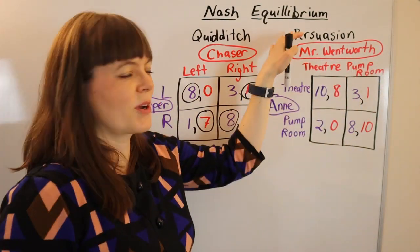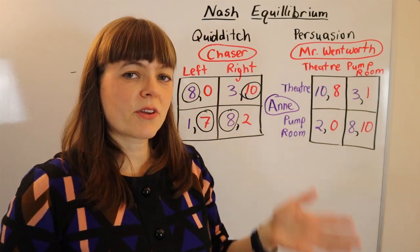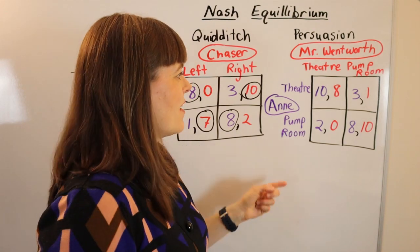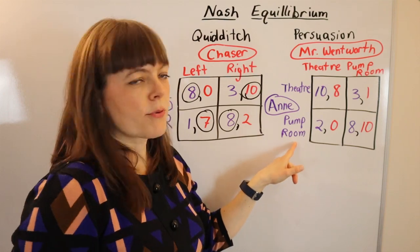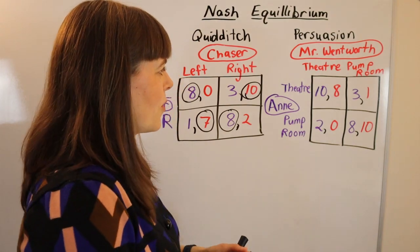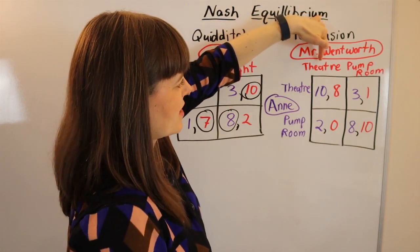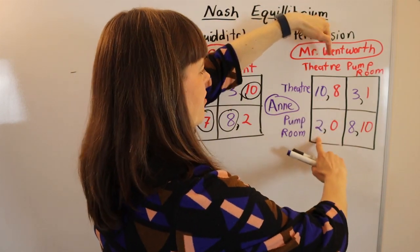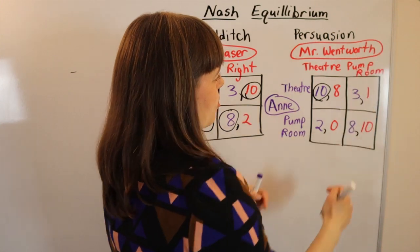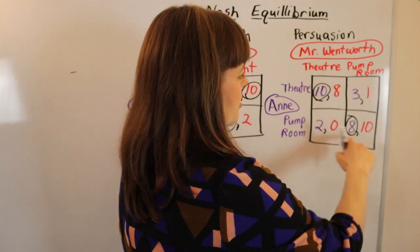Let's do the Persuasion example. Persuasion is a book by Jane Austen with two characters, Anne and Mr. Wentworth, who both kind of like each other and are hoping to run into each other when they go out on the town. They can choose either the theater or the pump room, hoping to end up at the same place by happenstance. Looking at Anne's payoffs in purple: if Mr. Wentworth chooses the theater, she prefers the 10 over the two — she'll wish she had gone to the theater. If Mr. Wentworth goes to the pump room, she prefers the eight over the three, meaning she'd wish she had gone to the pump room.